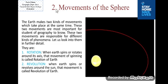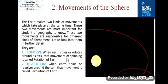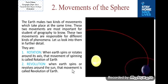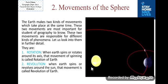The second topic is movements of the sphere. The Earth makes two kinds of movements which take place at the same time. These two movements are most important for students of geography to know, as they are responsible for different kinds of phenomena. They are rotation and revolution. When the Earth spins or rotates around its axis, that movement is called rotation of the Earth. When the Earth revolves around the sun, that movement is called revolution of the Earth.